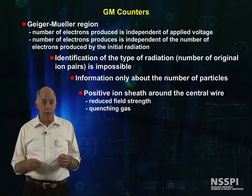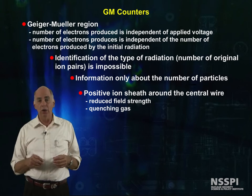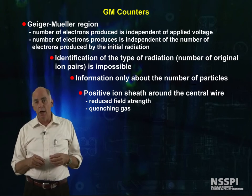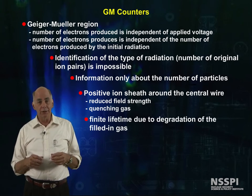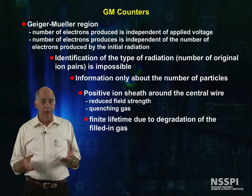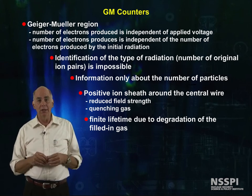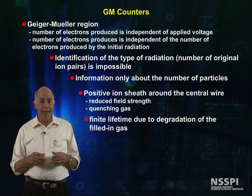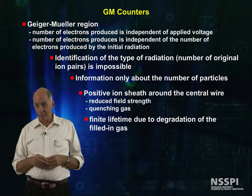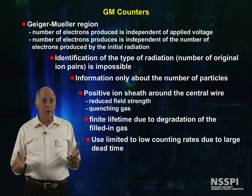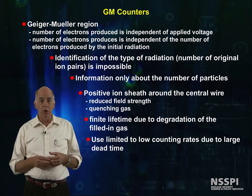Halogens can be used as quench gases, and they have the advantage of recombining later in the tube. Other quench gases can be used, but if they don't reform after use, then they limit the tube lifetime due to degradation of the fill gas. GM counters are limited to low count rates due to the large dead time for each count.